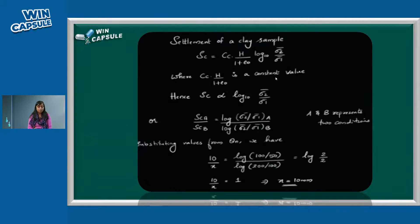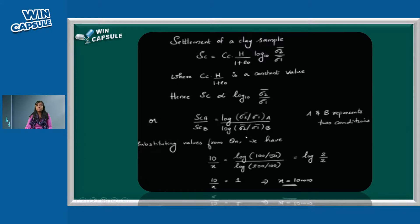So the further settlement is 10mm, which is the correct answer. One can also use the mv equation: the coefficient of volume change mv's value is given by the corresponding equation. If mv is given, you can write and compute the settlement directly using the mv-based settlement formula.